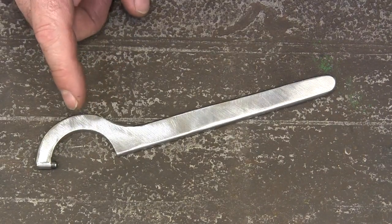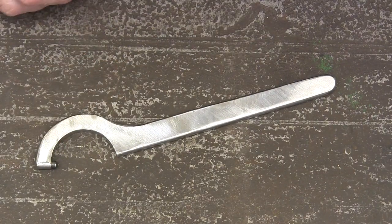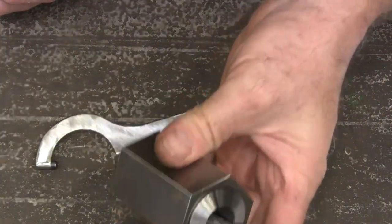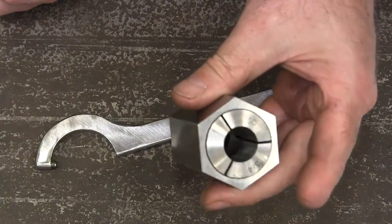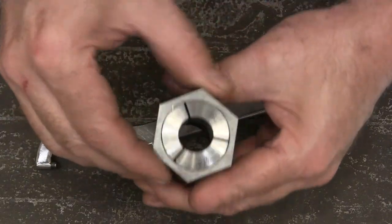This is what we're going to make today. It's a spanner wrench to fit my collet blocks. This is one of the collet blocks. This is the one that does six sides. I've got one that does four sides also.